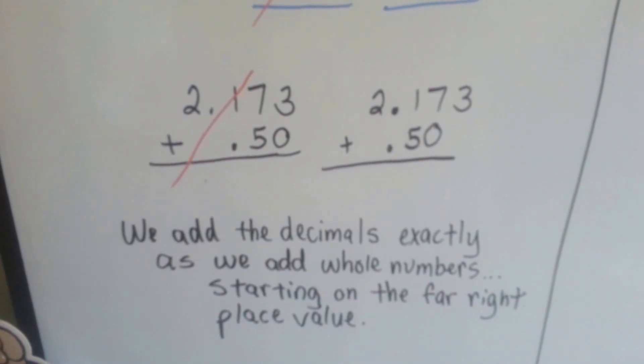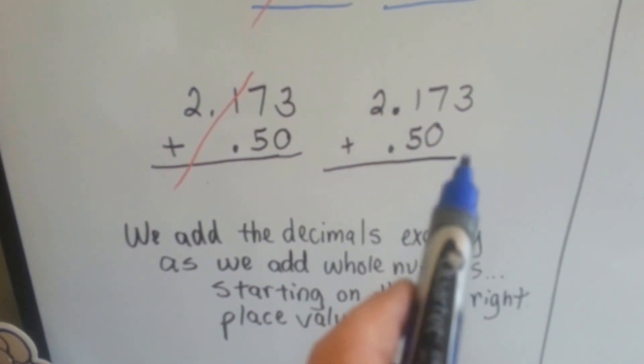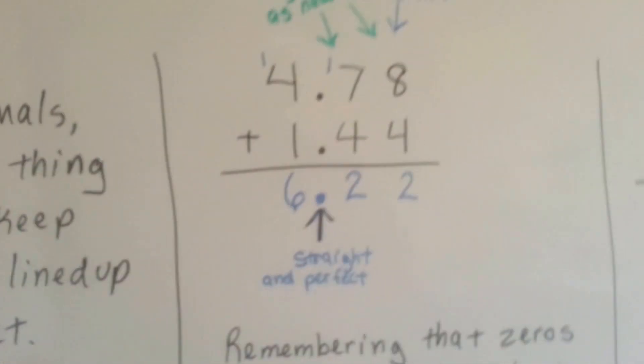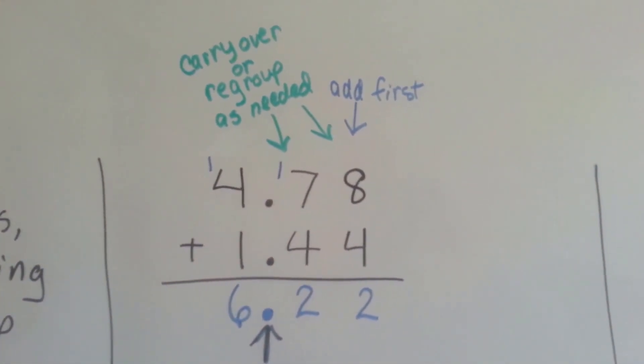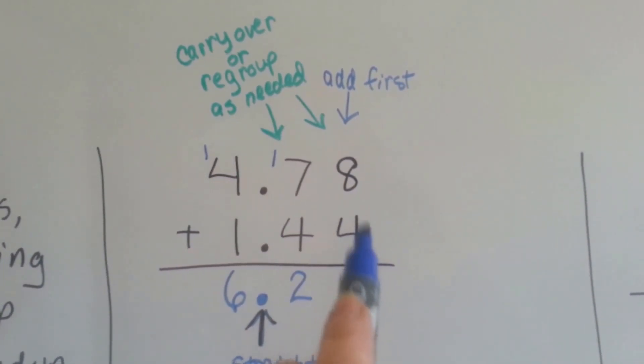We add the decimals exactly as we add whole numbers, starting on the far right place value, just as if the decimal point wasn't there. We carry over and regroup as needed, just like regular whole numbers, starting on this side first.